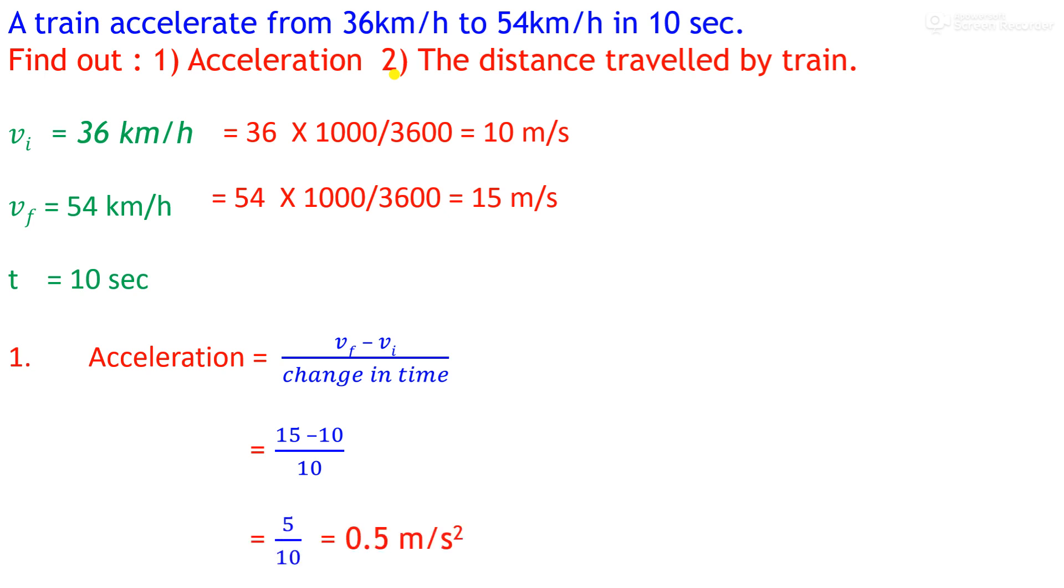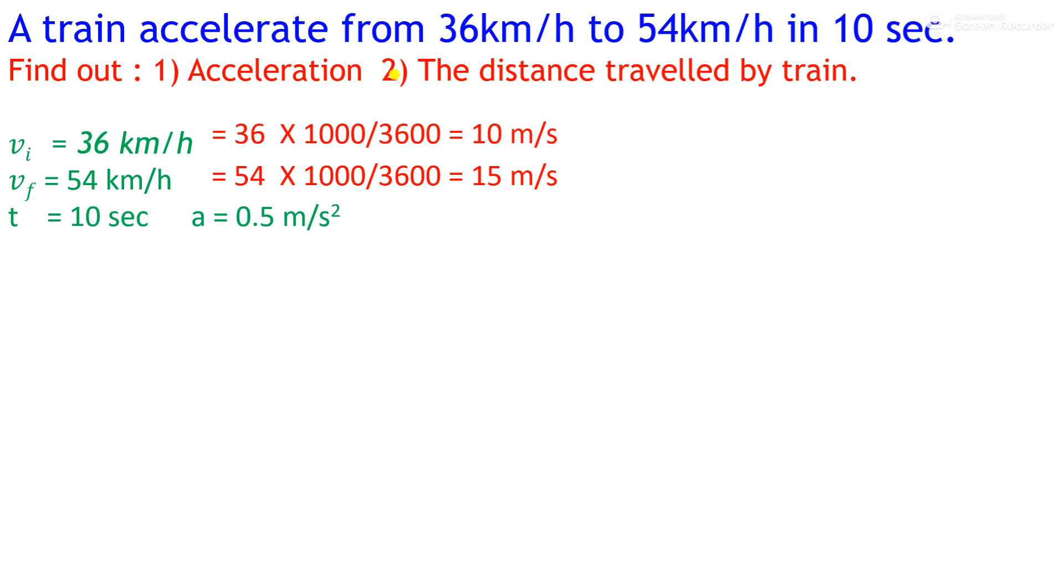Acceleration is 0.5 m/s². Now come to the second part: the distance traveled by the train. We already have this data and now we have acceleration of 0.5 m/s². We can calculate the distance traveled by the train by two methods or two formulas.